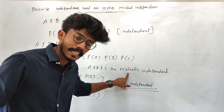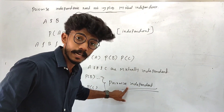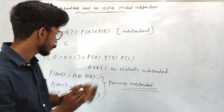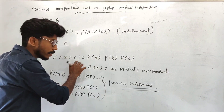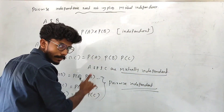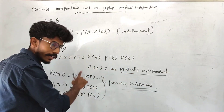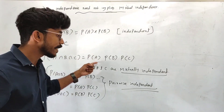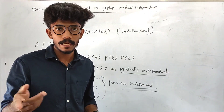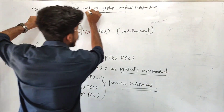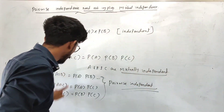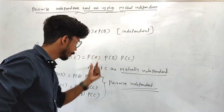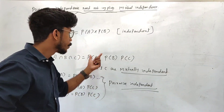Mutually independent implies pairwise independent. But pairwise independent does not imply mutual independence. So if three events A, B, and C are mutually independent, they must be pairwise independent. However, pairwise independence is a weaker condition than mutual independence.